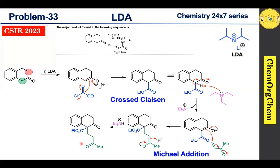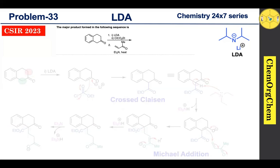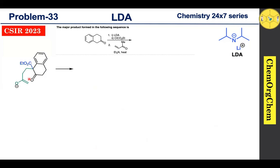After the Michael addition step, the intermediate is still present in basic medium and readily undergoes intramolecular aldol condensation. Triethylamine abstracts one of the methyl protons to produce the corresponding enolate ion. This enolate ion reacts with the carbonyl group intramolecularly — electrons shift, the pi electrons attack the carbonyl carbon — producing the corresponding intermediate.